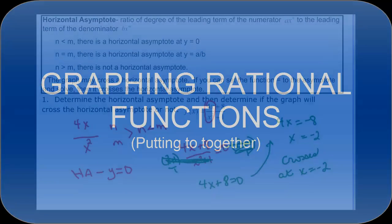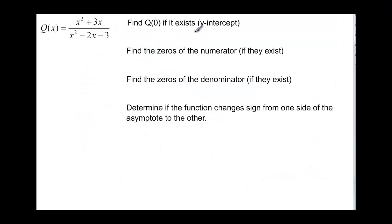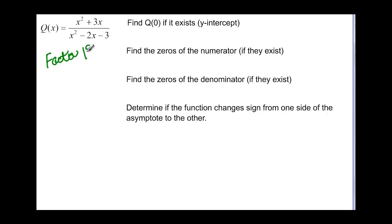Let's move on. We're going to try to graph this function and we need to find some different things about it. The first thing you would want to do is find the y-intercept — in other words, let x be zero. A good way to do that, because of all the other things we want to do, is to factor first.